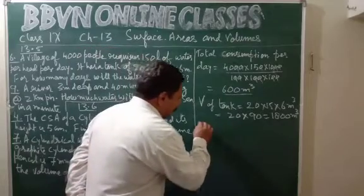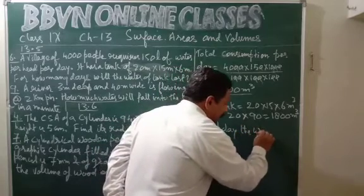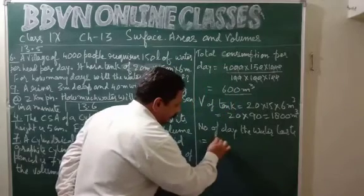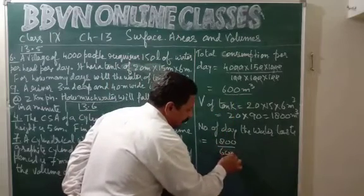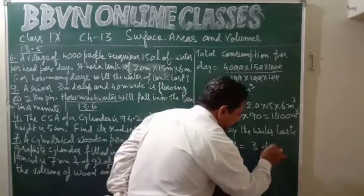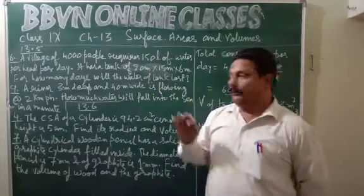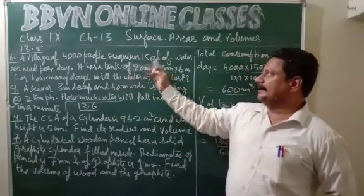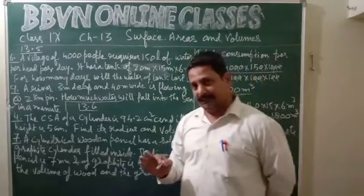Now, number of days equals volume of the tank divided by the water required per day. The zeros cancel, and 18 upon 6 is 3 days. So the water in the tank will last for 3 days for a village of 4000 people where each person requires 150 liters of water per day.